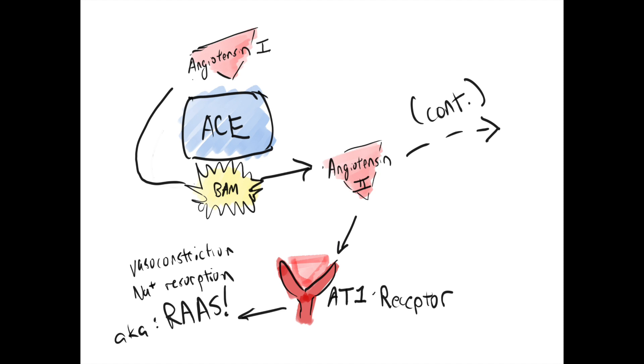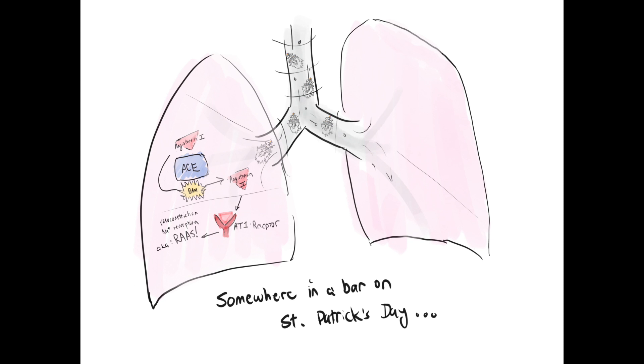We have good old ACE, angiotensin converting enzyme. She's that molecule that takes angiotensin 1, that's angiotensin 1 with the Roman numeral, and changes it to the much more active angiotensin 2. And for the most part, ACE tends to be localized in the lung and gut tissue. And angiotensin 2 is one of the active players in the RAS cascade, right?